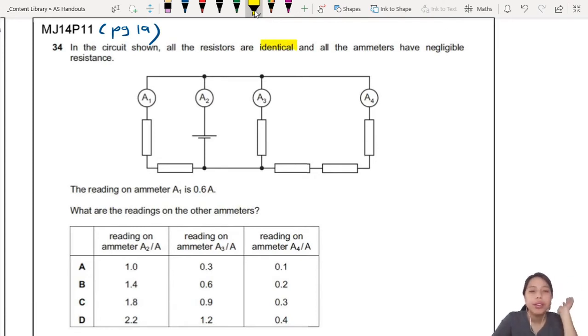They don't have resistance, okay good. Reading on ammeter one is 0.6, what are the readings on other ammeters? That's all the info they give. Look at this circuit, loop and loop and loop. How? Well the first step I'm gonna do is, this looks a bit crowded, I am going to redraw this thing.